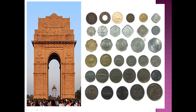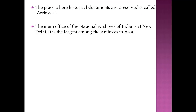Material sources or physical sources of the post-independence era include coins — for example, 2 paisa, 5 paisa, 10 paisa coins that are no longer in circulation. India Gate is also part of the modern historical sources, built during the modern period of history. The National Archives of India is located at New Delhi, which is where historical documents are officially preserved.